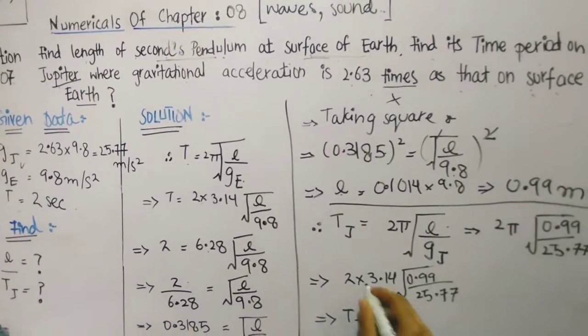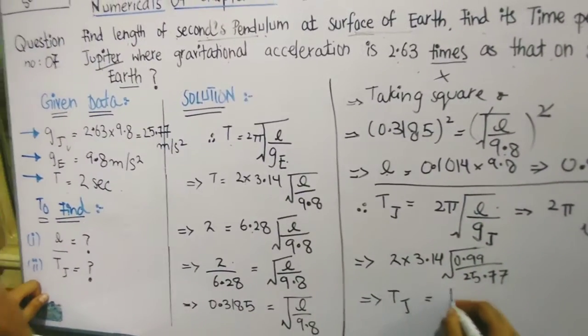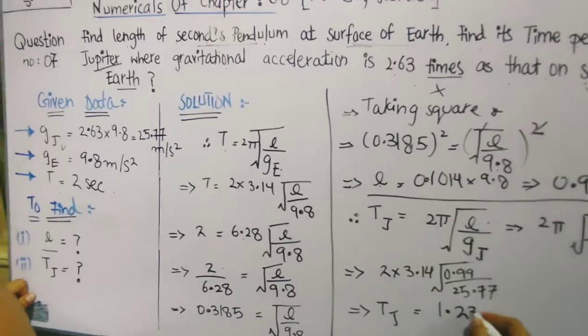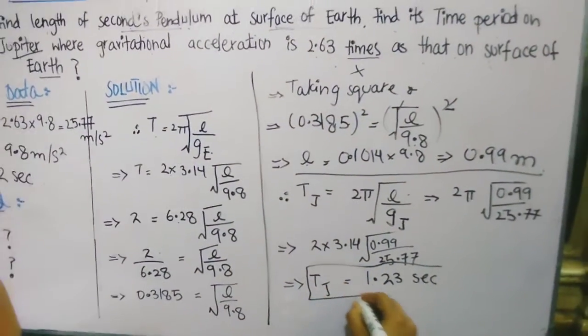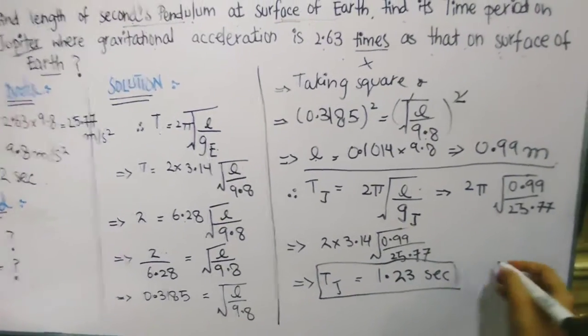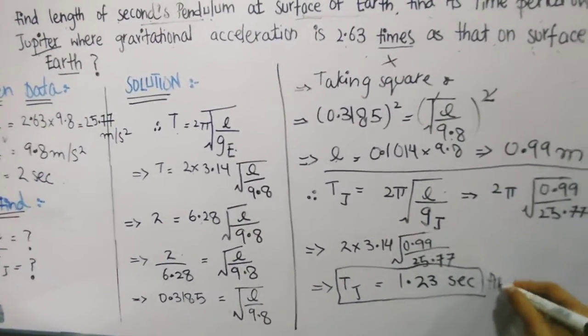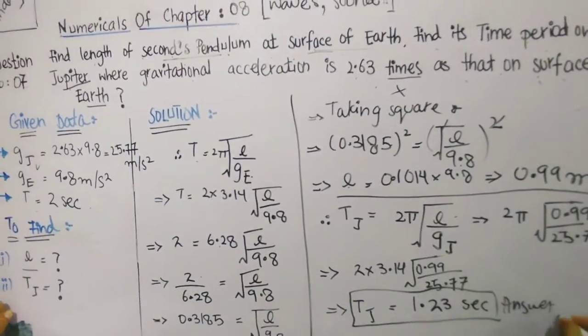There is no need to be confused in this, so simply you have to solve mathematics. It is under root, multiply 3.14 and 2, so you get the answer 1.23 seconds, which is the time period on Jupiter with the gravity 25.77 meters per second squared.